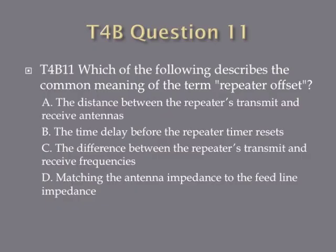Question 11. Which of the following describes the common meaning of the term repeater offset? A. The distance between the repeater's transmit and receive antennas. B. The time delay before the repeater timer resets. C. The difference between the repeater's transmit and receive frequencies. D. Matching the antenna impedance to the feed line impedance.